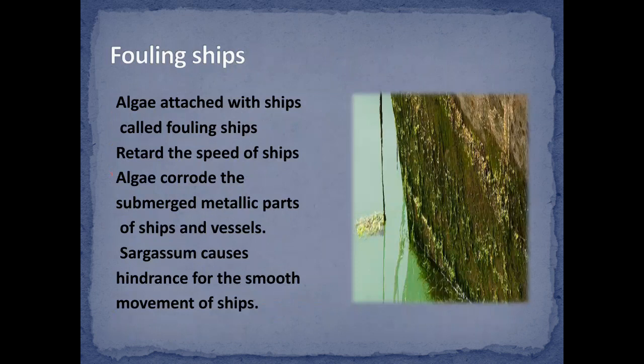Fouling of ships: algae attached to ships are called fouling algae. They retard the speed of ships. Algae coat the submerged metallic parts of ships and vessels, causing hindrance for smooth movement of the ship.